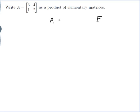So I want to write A as a product of elementary matrices. I would like to write A equal to a product of elementary matrices. Since we always multiply elementary matrices on the left, I'll do them from right to left — something like E1, E2, E3, up to EK — where all of those E's are elementary matrices.